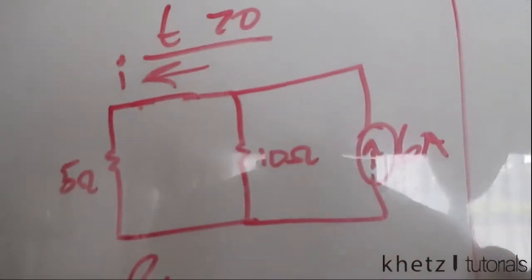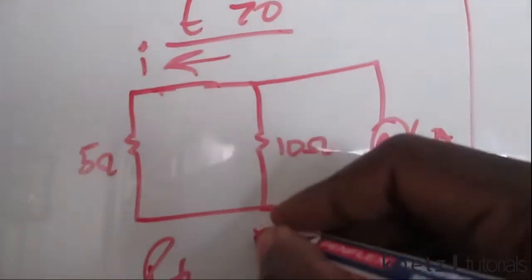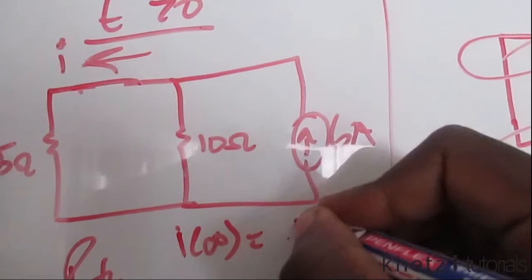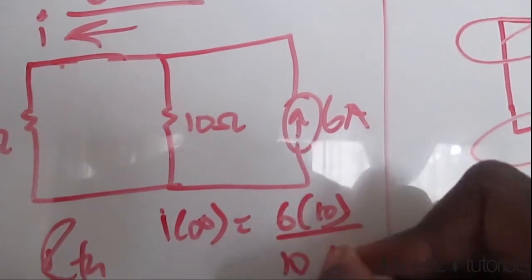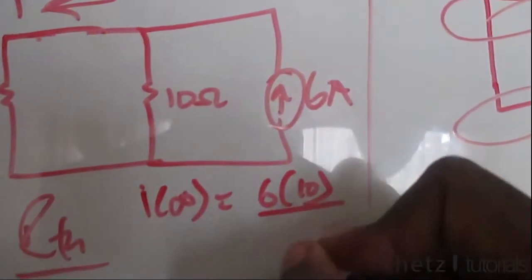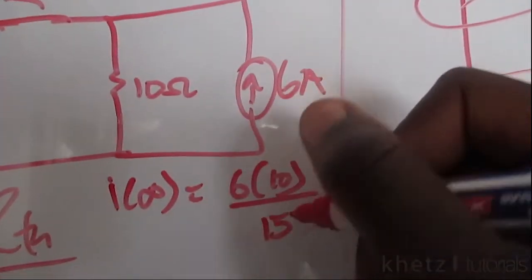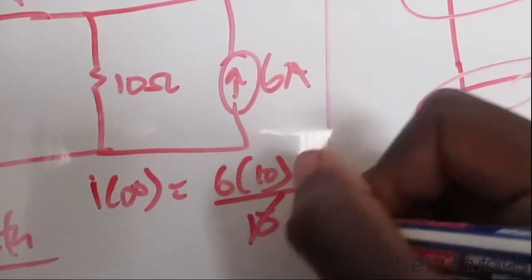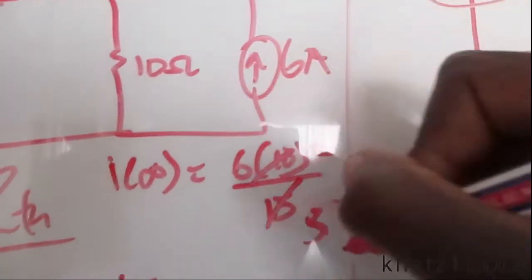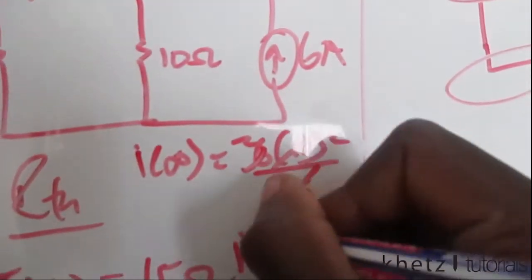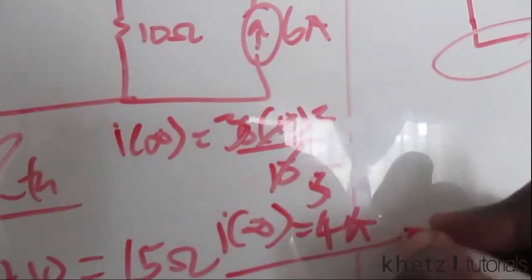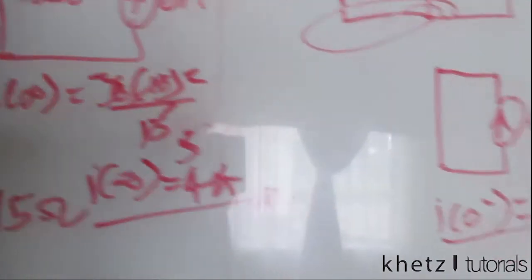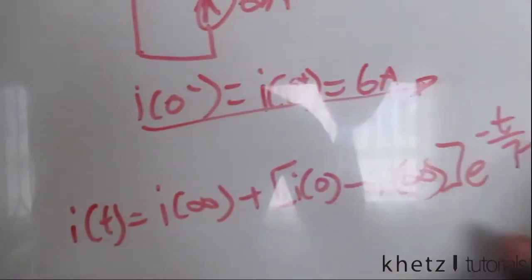Let's find i(∞) using current division. i(∞) equals 6 multiplied by 10 divided by (10 plus 5), and this is 15. Dividing that, we have 3, we have 2 at the top, then this cancels out, we have 2 at the top, and therefore i(∞) is ultimately equals to 4 amperes.